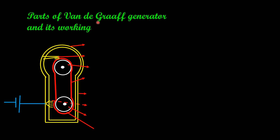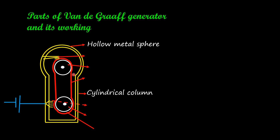Let us look at the parts of the Van de Graaff generator. It consists of a metallic hollow sphere resting on a cylindrical column as a stand, with a base. The inside of the spherical portion is hollow — there is nothing inside. There are two metal pulleys: pulley one is inside the spherical structure and pulley two is near the base. Over these two pulleys runs a dielectric, that is a non-conducting insulating belt. There is a metallic brush near the lower pulley and one more near the upper pulley.